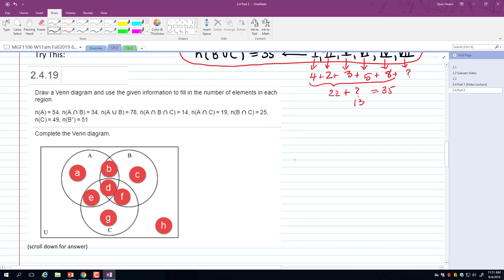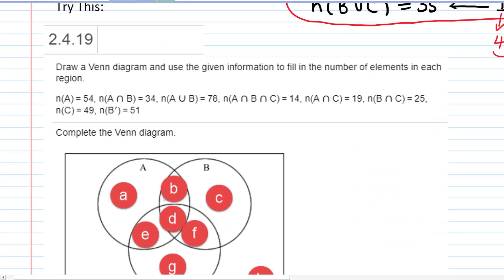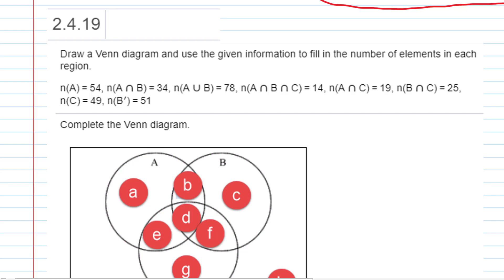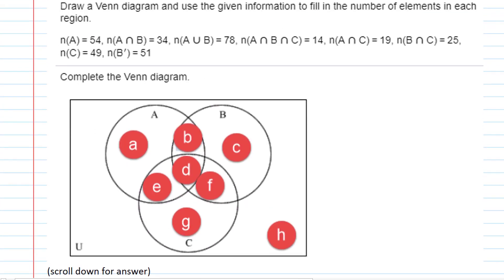Hi, I'm Ms. Hearn. Let's get started. We are going to work this problem. Draw a Venn diagram and use the given information to fill in the number of elements in each region.